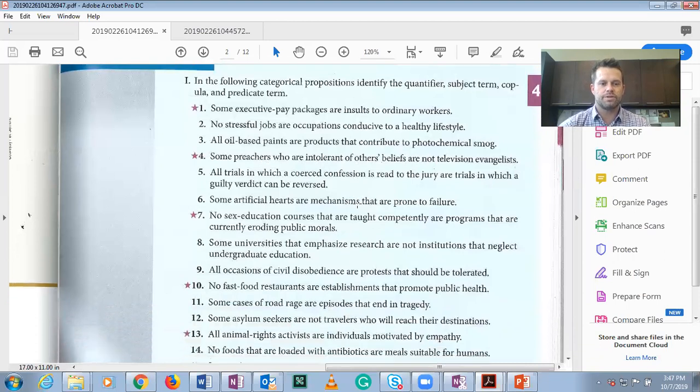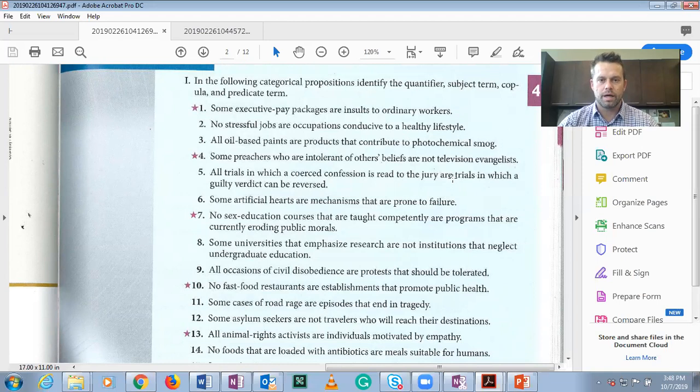Number five. All trials in which a coerced confession is read to the jury are trials in which a guilty verdict can be reversed. All is the quantifier. Universal quantifier. Trials in which a coerced confession is read to the jury is the subject term. Are copula and trials in which a guilty verdict can be reversed is our predicate term.